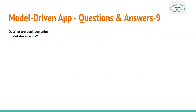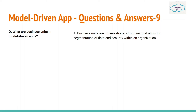Next question: What are business units in model-driven apps? Business units are organizational structures that allow for segmentation of data and security within an organization. For example, in an organization there can be an HR department and a Finance department — Finance users don't need access to HR information and vice versa. This access is controlled by defining business units.